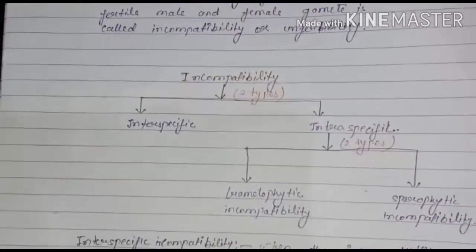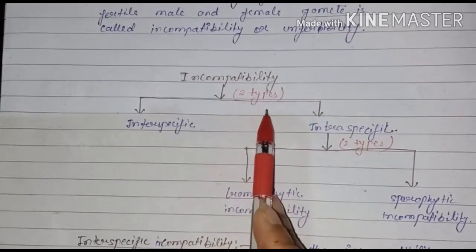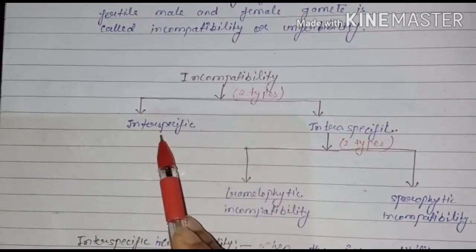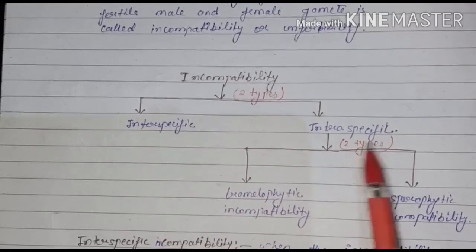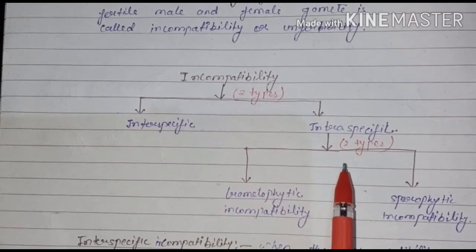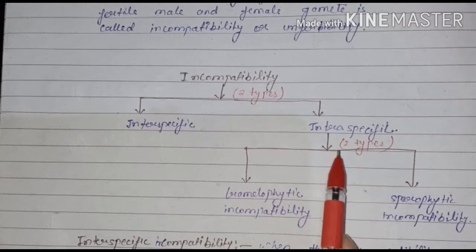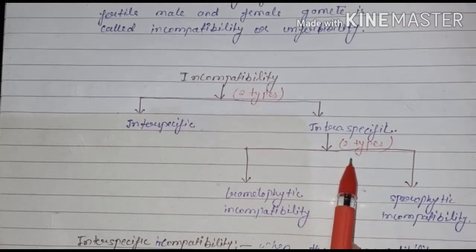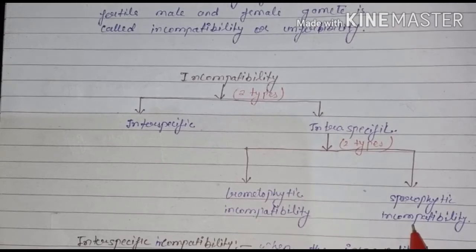Incompatibility is divided into two types: interspecific and intraspecific. Intraspecific is further divided into two types: gametophytic incompatibility and sporophytic incompatibility.